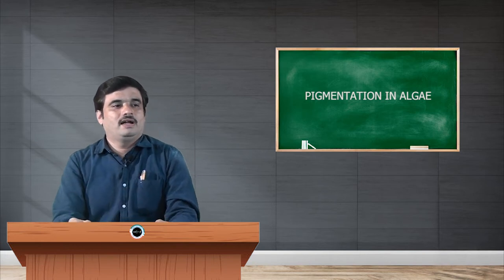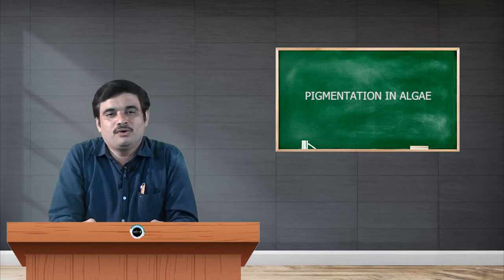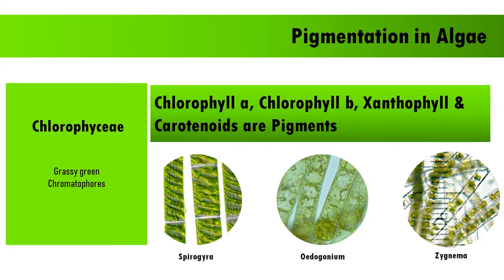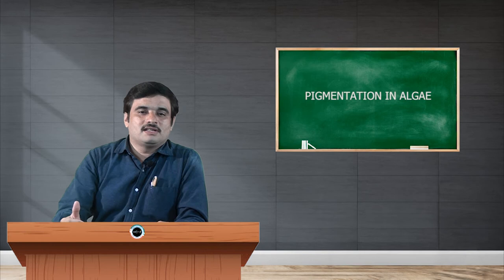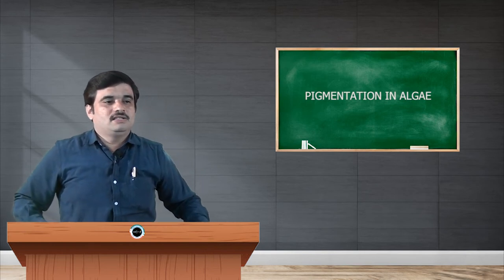The first class is Chlorophyceae, where the pigments are present in grass-green colored chromatophores. These chromatophores are rich in chlorophyll a, chlorophyll b, xanthophyll, and carotenoids, and all four pigments are present in almost equal balance. Examples include Spirogyra, Oedogonium, and Zygnema.